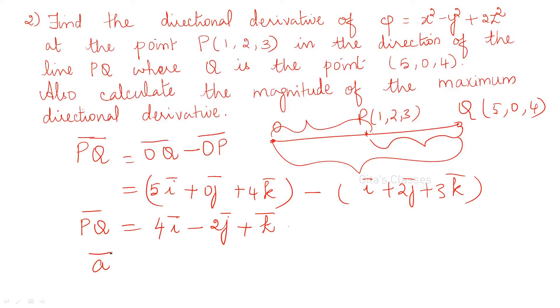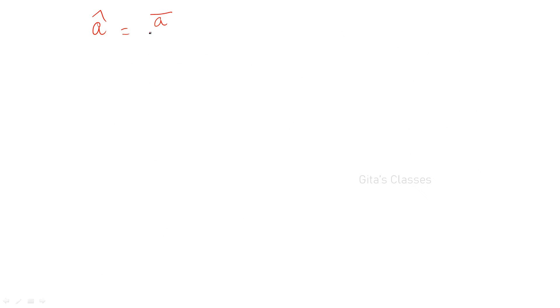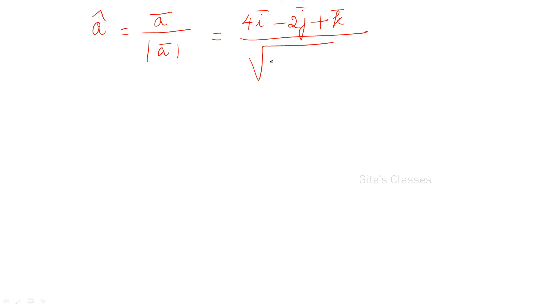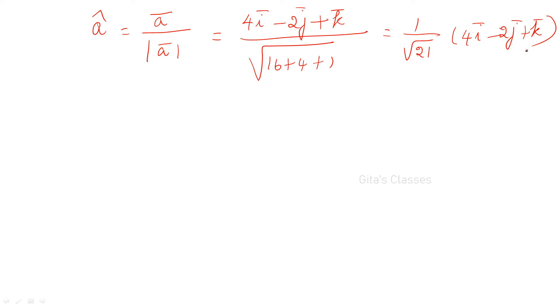In the previous problem, a_bar was given. Now we have found out that vector. So a_bar equals 4i minus 2j plus k. Let us find a_cap. A_cap equals a_bar by modulus of a_bar, which is 4i minus 2j plus k divided by root of (16 plus 4 plus 1) equals root of 21. So a_cap equals 1/√21 times (4i minus 2j plus k).